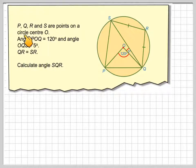Another circle theorem question. We've got PQRS. PQRS are points on a circle centre O, so if they're points, this is a cyclic quadrilateral. Angle POQ is 120 degrees, and angle OQS is 5 degrees, and also QR and SR are equal, making this triangle isosceles. Calculate angle SQR.